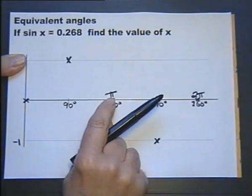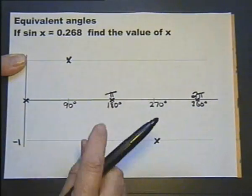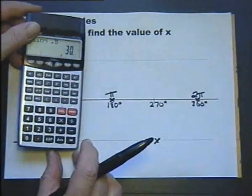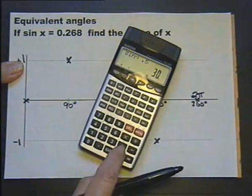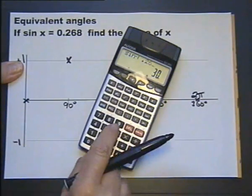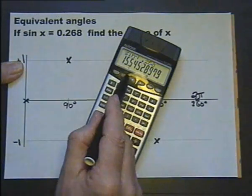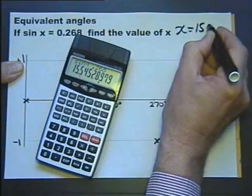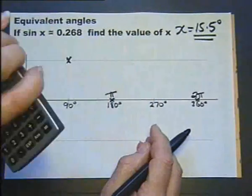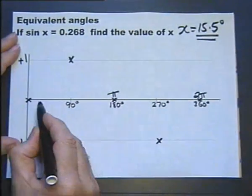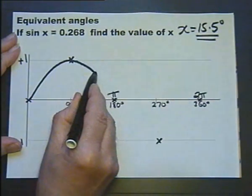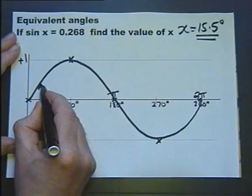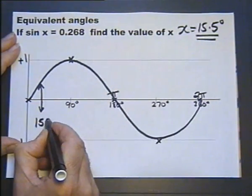Let's look at this one. If sine of x is 0.268, working in degrees with the calculator in degree mode, we'll do inverse sine of 0.268, which gives an answer of 15.545. Let's do it to one decimal place and we get x is 15.5 degrees. Now to find the other possible answer, we need a sketch, which we should be able to do very quickly to give us a picture of what's going on.